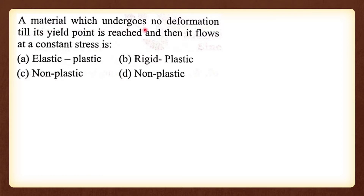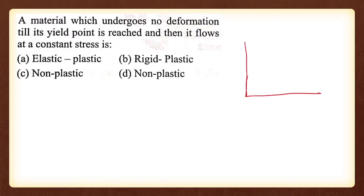A material which undergoes no deformation till its yield point is reached and then flows at a constant stress — when the yield point is reached and the material deforms at constant stress, option B is the correct answer, describing a perfectly plastic material.